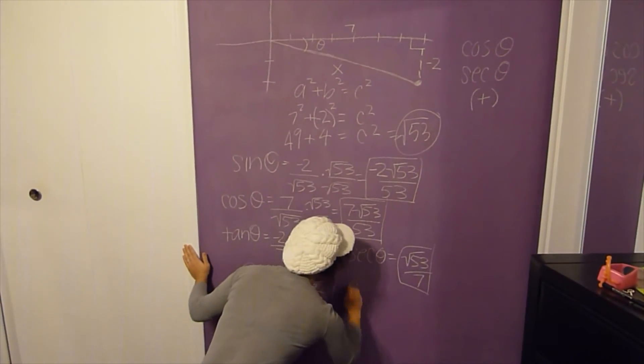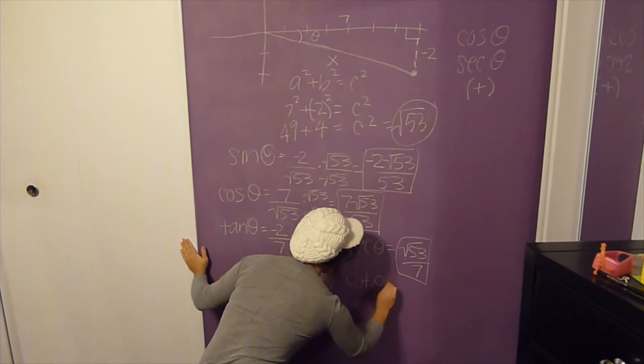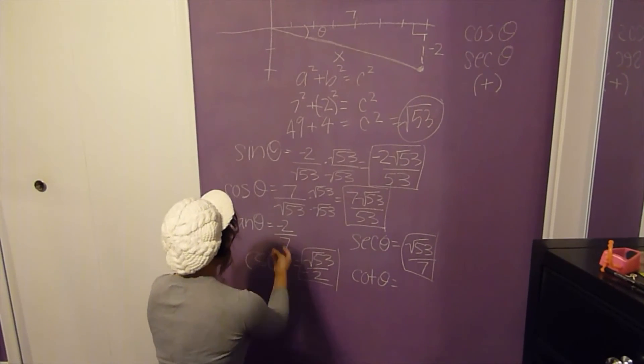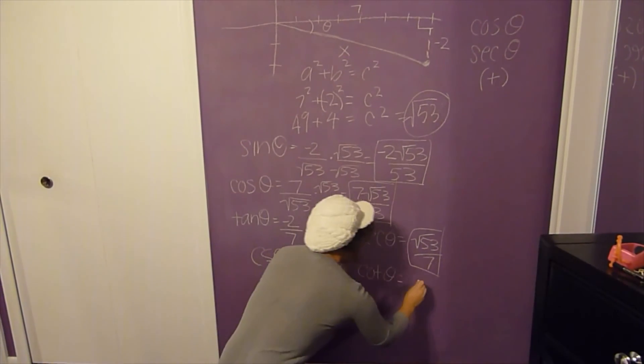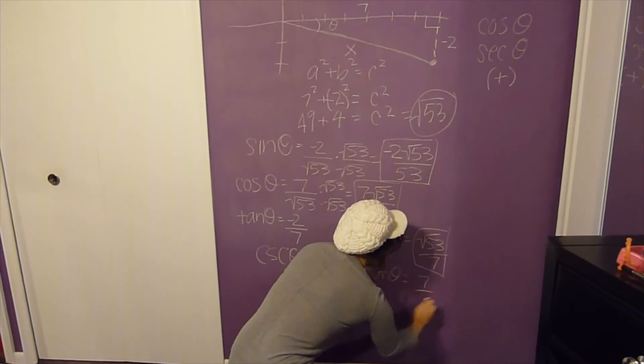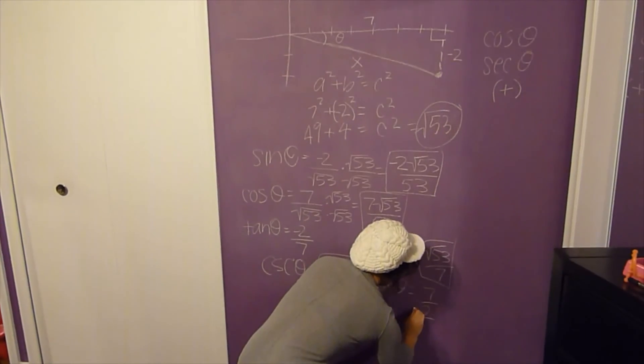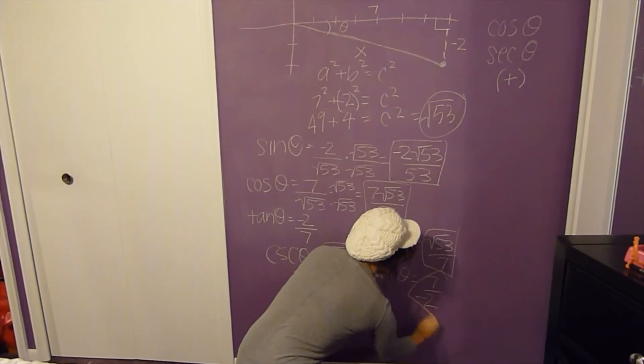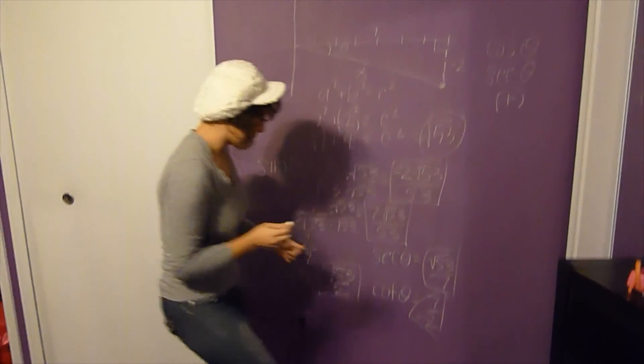And for your cotangent, you're going to have the opposite of tangent. So it'll be 7 over -2. And that does not look like a box, but that's it.